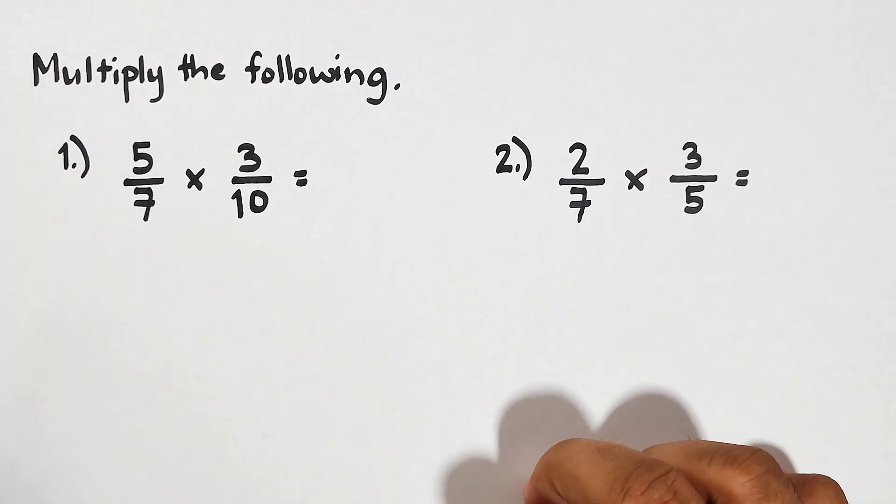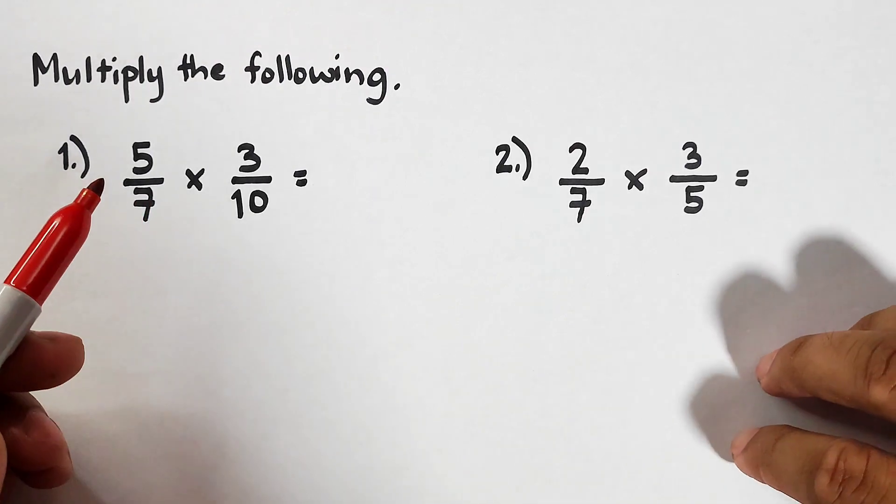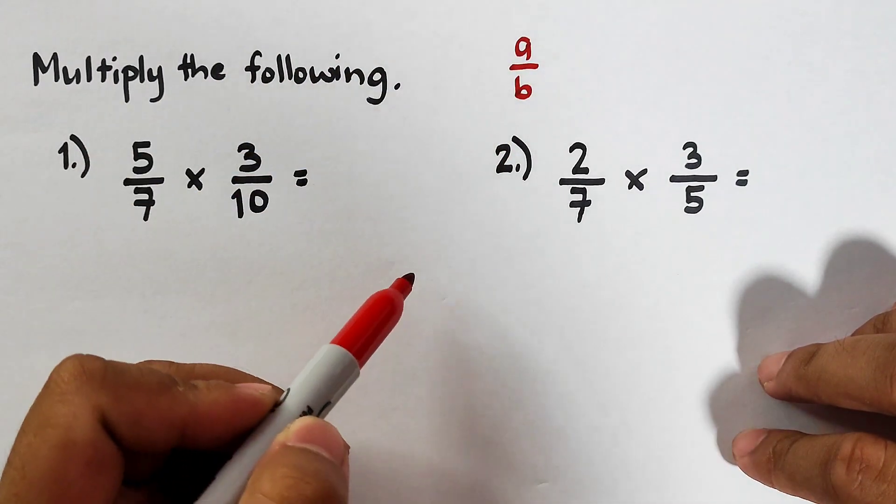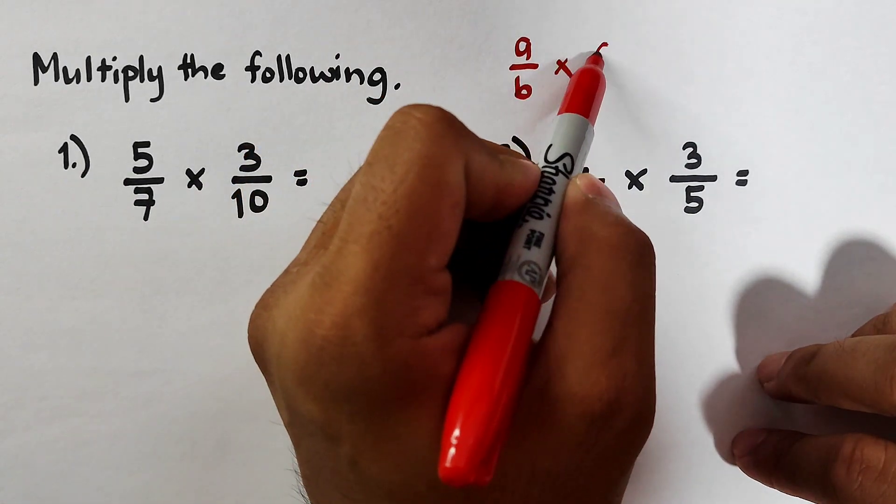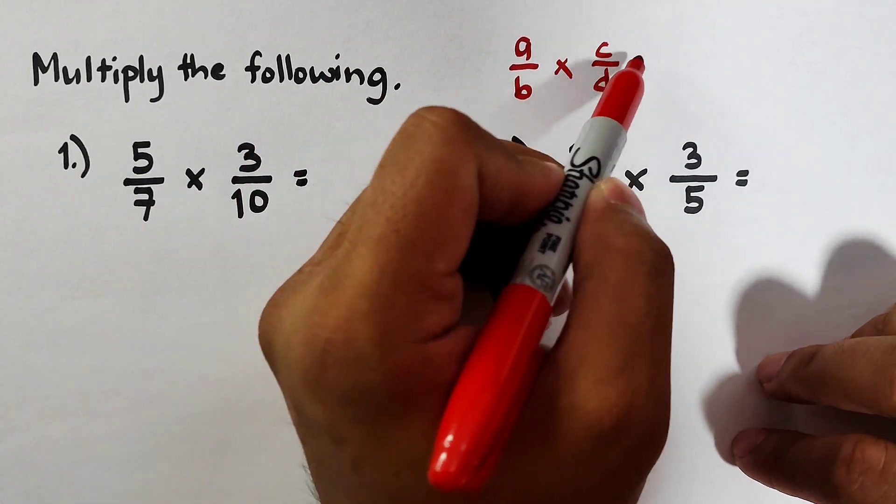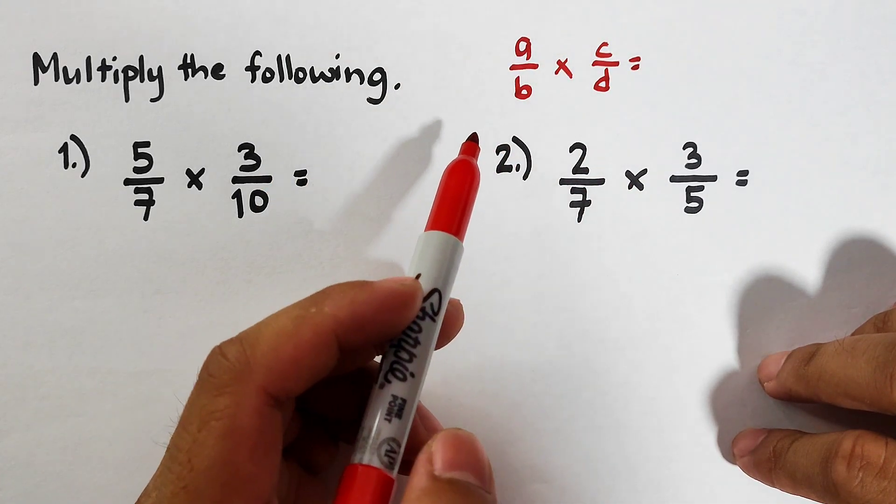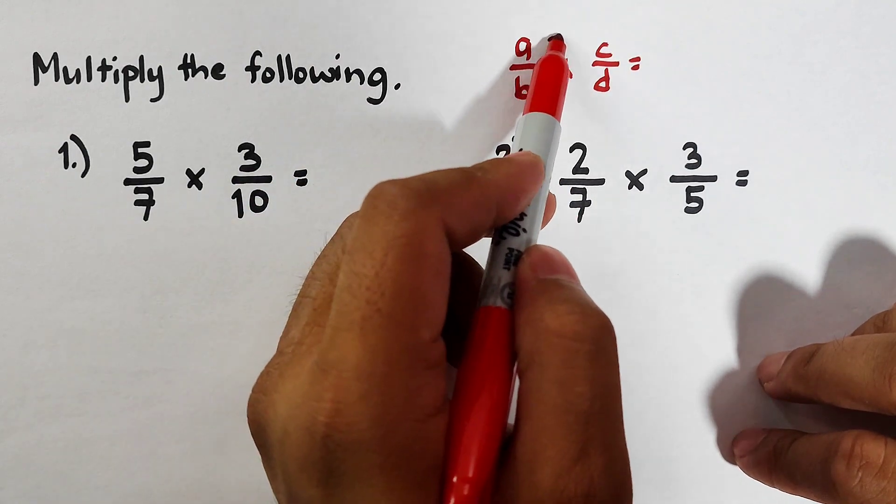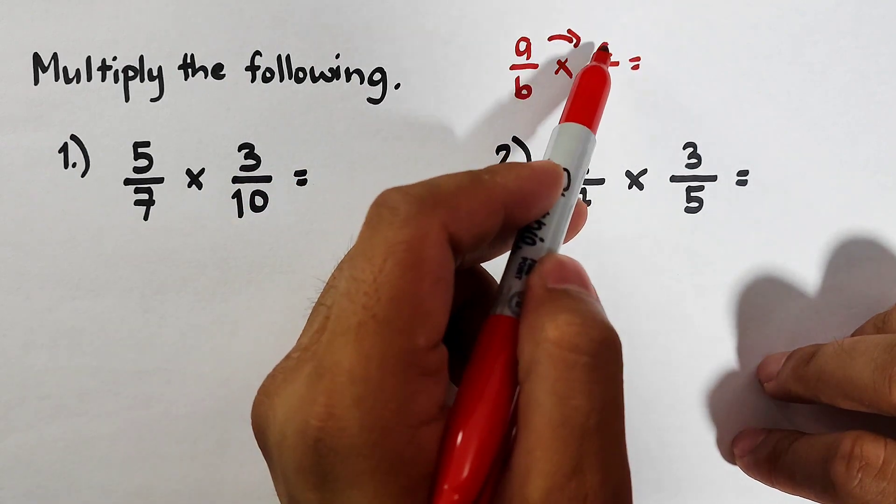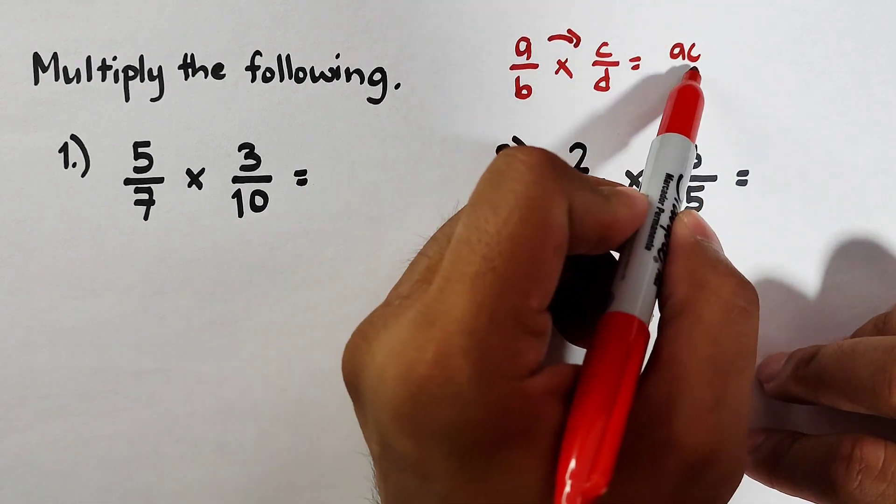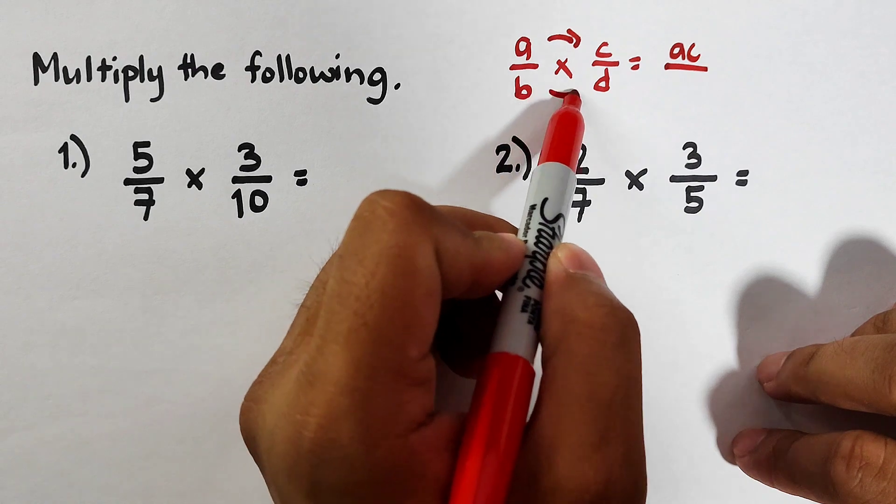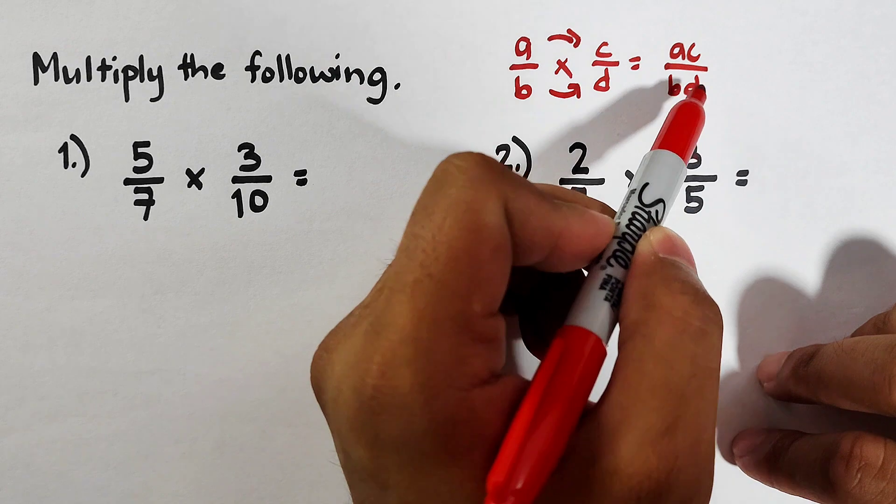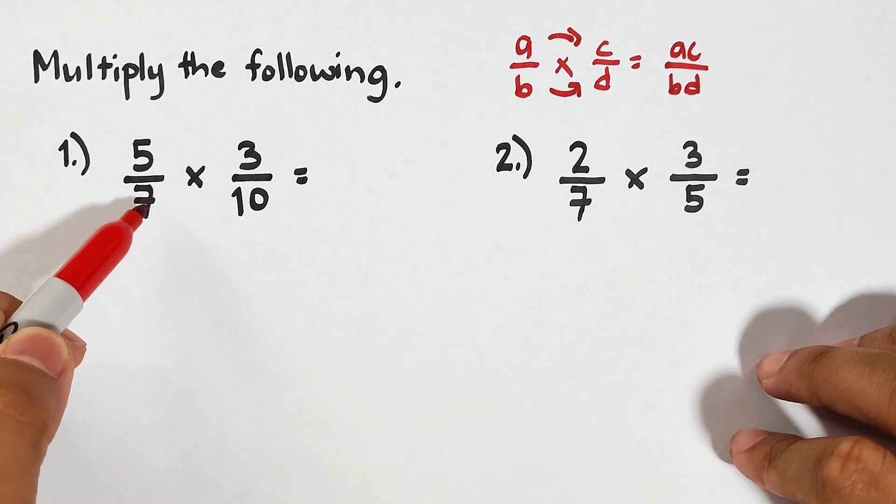Now guys, to multiply fractions, we have a specific rule. Let's represent the fractions as a/b times c/d. To multiply it, what you need to do is multiply the numerators at the top of the fractions. We have a times c, that is ac over b times d, that is equal to bd. Now let's apply that rule in this given example.